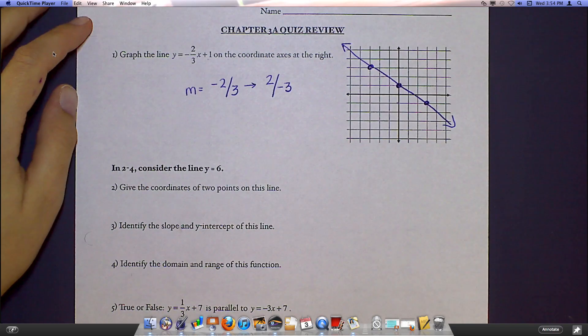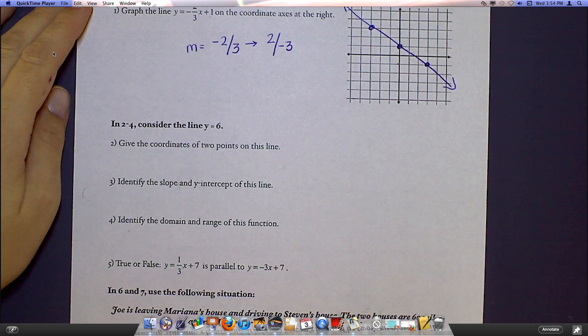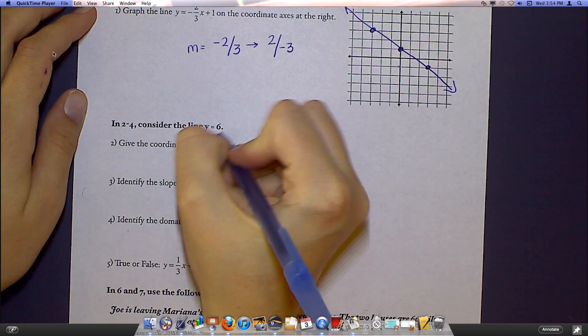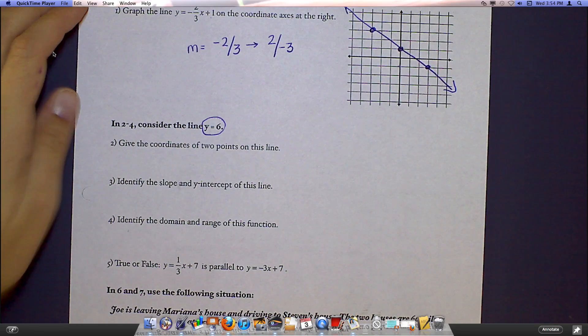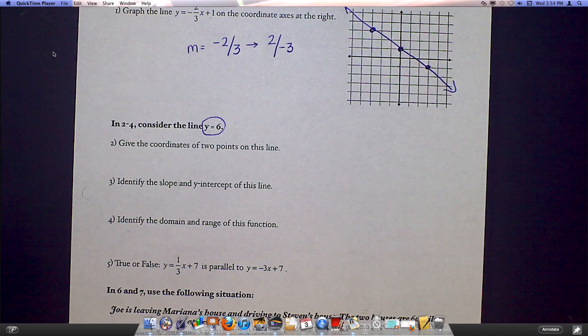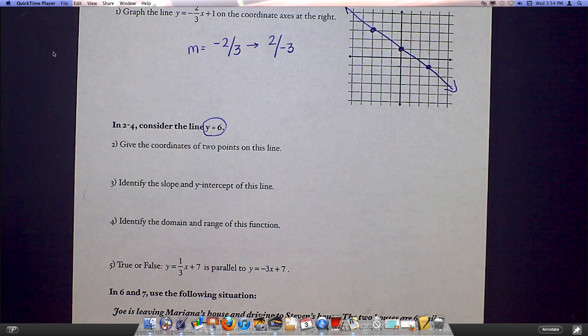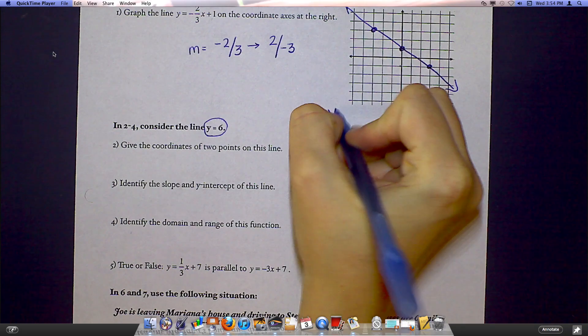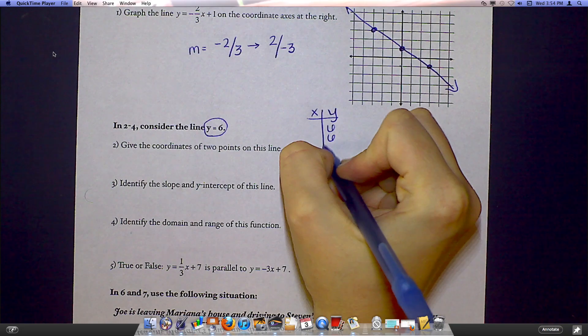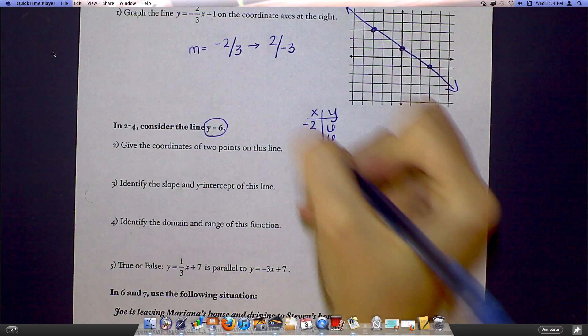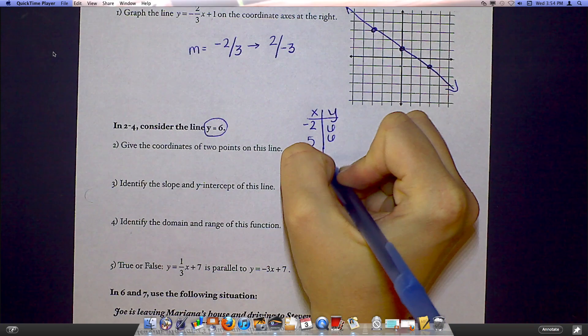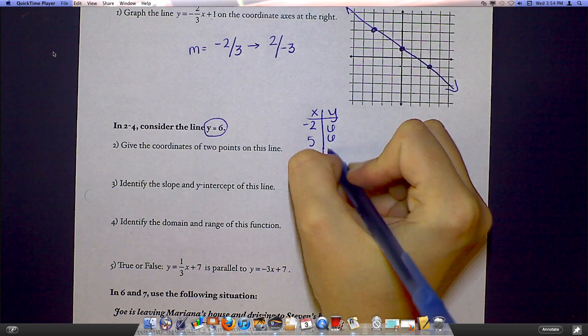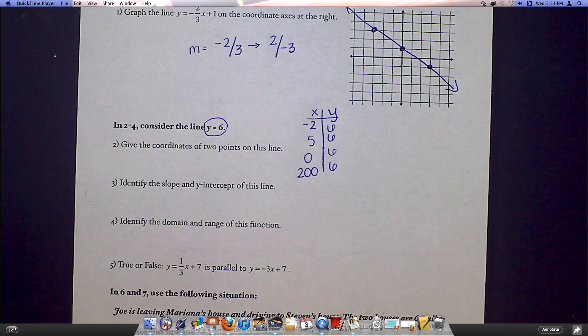Now, I see a lot of confusion on this next section. Two through four have nothing to do with this graph up here. Two through four are all talking about the line y equals six. Remember, that's a line where every single y coordinate is six. And if you were to think of this in a table, let me just sketch this over here. This would be one of these situations where every y is a six, and then x can be anything you feel like. It could be a negative two, it could be a five, it could be a zero, it could be a 200. No matter what, y is always going to equal six. So that's what's going on in this equation.